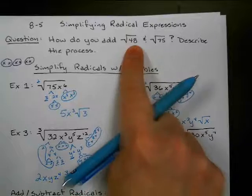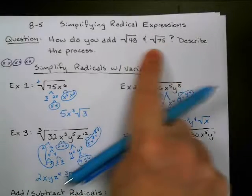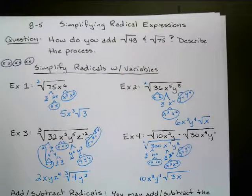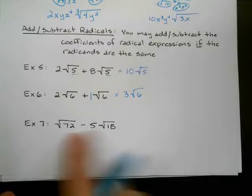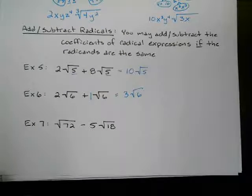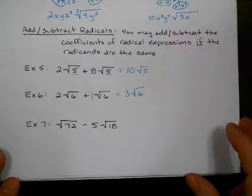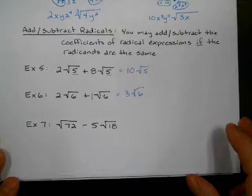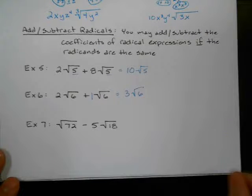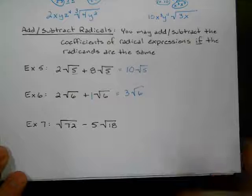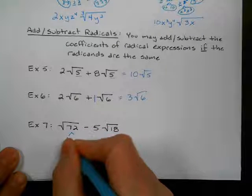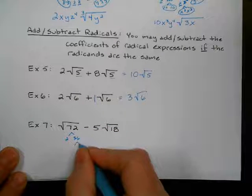All right, last one. So this kind of gets to this problem right here. See, we couldn't combine these two, right? Because they don't have the same radicand. We can't combine these two because they don't have the same radicand. So what should we do? Well, what we should do is we should reduce the radicals first to see if we can get the same radicand. So this one I'm going to split up into 2 and 36. Ooh, 36 is a perfect square. So this is 6 and 6.